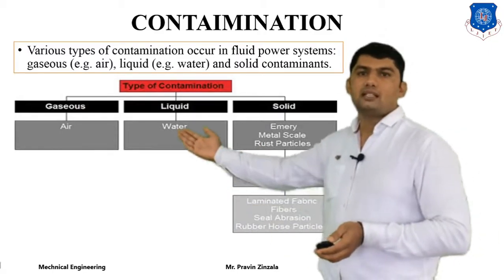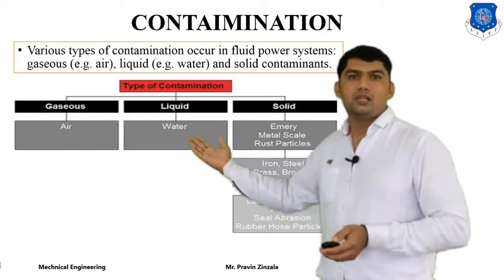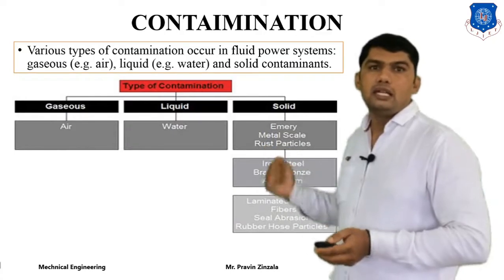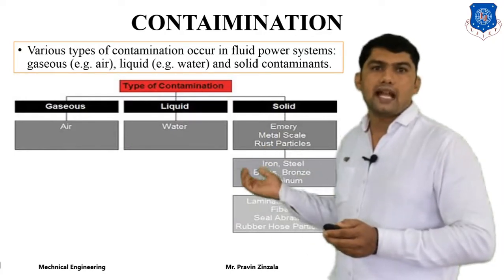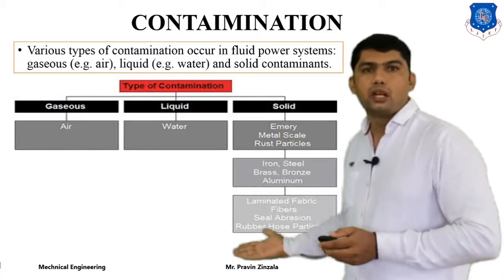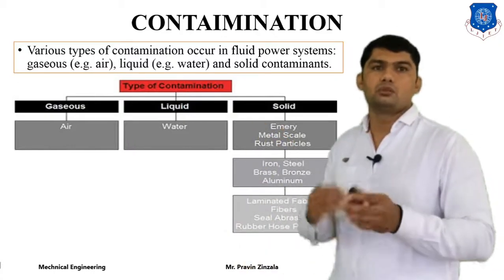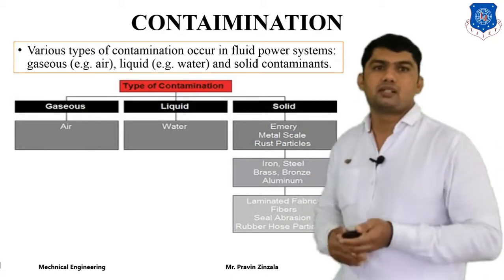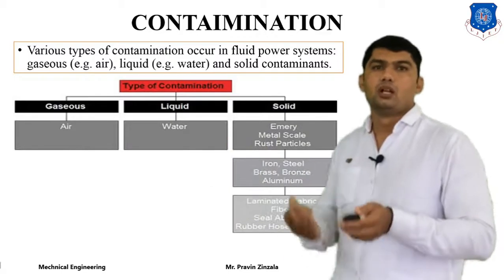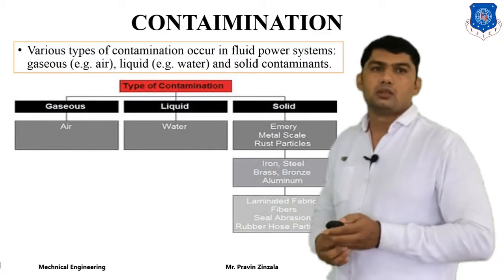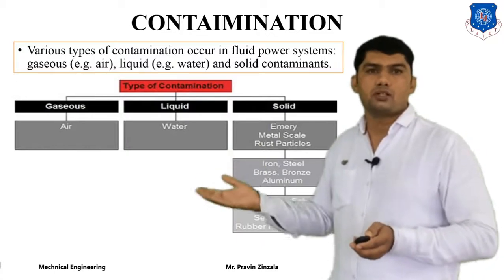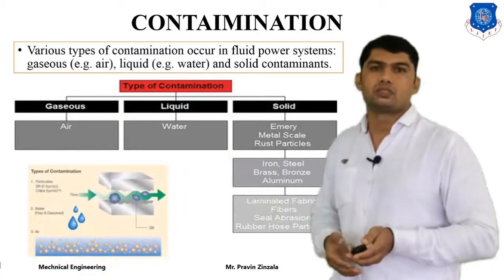Gaseous contaminants include air; liquid contaminants include water; and solid contaminants include emery, metal, scale, rust, particles, and other particulates. These contaminants continuously flow throughout the system and decrease overall system efficiency. We should remove contaminants from the system through proper utilization, operations, maintenance, or different filtration processes.